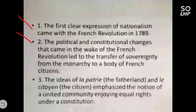The political and constitutional changes due to the French Revolution brought a total change in the political system of France. The constitution that came in the wake of the French Revolution led to the transfer of sovereignty from the monarchy to a body of French citizens — meaning monarchy was replaced by a democratic system where people would take their own decisions and choose their own government. La Citoyenne emphasizes the nation of a united community enjoying equal rights under a constitution, where all people should be treated equally and equal in the eyes of law.